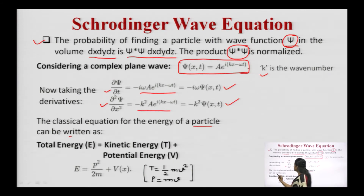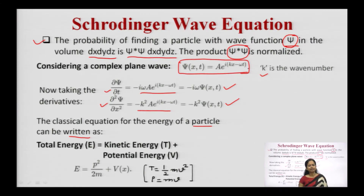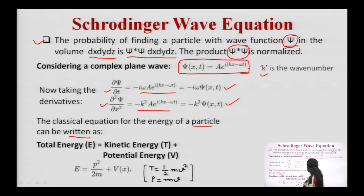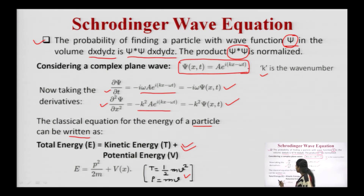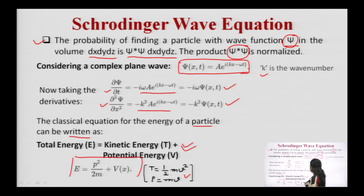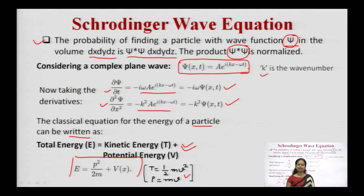The classical equation for the total energy of a particle is the sum of kinetic energy and potential energy: E = (1/2)mv² + V(x). Since momentum p = mv, the kinetic energy term becomes p²/(2m). So the total energy is written as E = p²/(2m) + V(x).